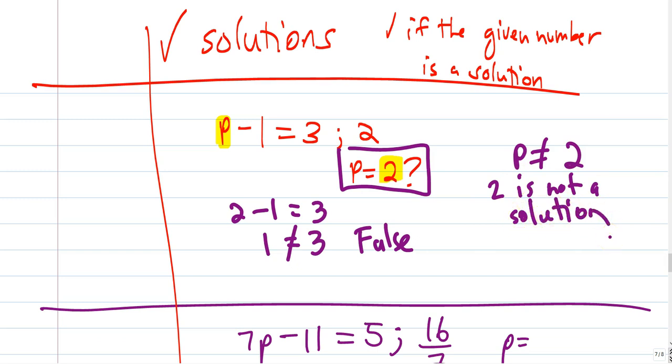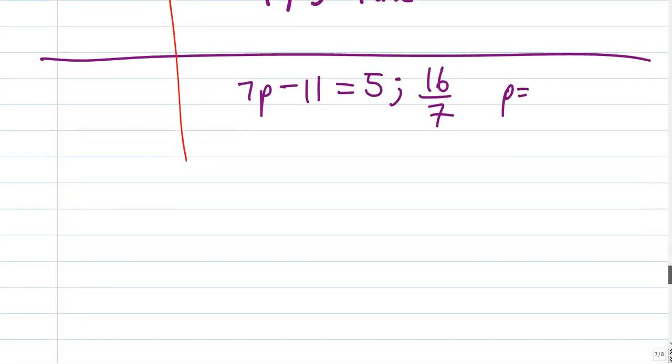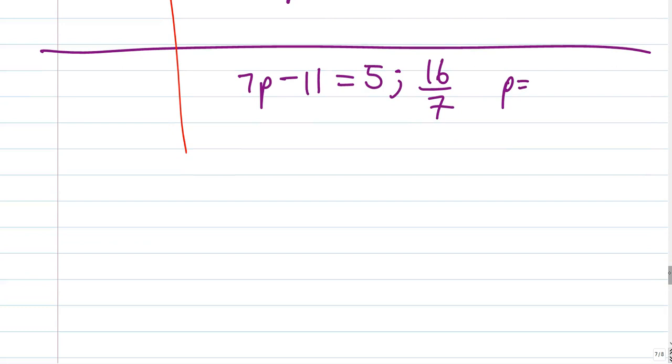Keep in mind, they're not asking you to solve this at this point. We will be doing that. They're just asking you, is this the solution? But what happens is it gets a little more complicated, like 7P minus 11 equals 5, semicolon, 16 over 7. What the heck? What are they asking again, right? Well, they're asking, is P equal to 16 over 7? That's what they're really asking with this last statement, right? This is their saying, does it equal 16 over 7?